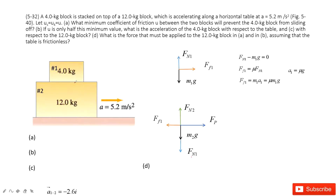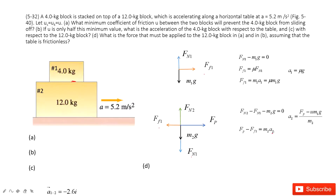This friction arises from the interaction between number one and number two at their contact surface — equal in magnitude but opposite in direction. So we can write the equations. On the y-component: Fn2 minus Fn1 minus M2·g equals zero. On the horizontal direction: Fp minus friction equals M2·A2. Solving, A2 equals Fp minus mu·M1·g, all divided by M2.